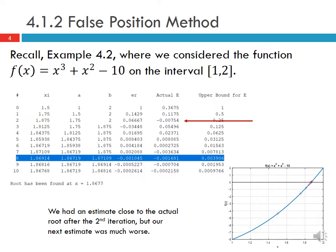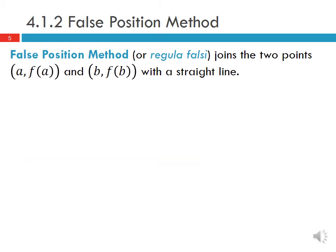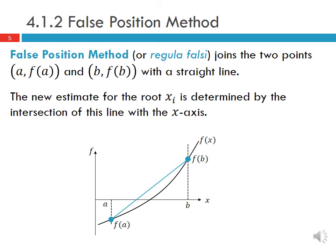The false position method, which is also called regula falsi, joins the two points (a, f(a)) and (b, f(b)) with a straight line. We have this function f(x) and our limits of the interval a and b, and the values of the function f(a) and f(b). We join these two points with a straight line, and then the next estimate for the root is determined by the intersection of this line with the x-axis, the point xi as shown here.